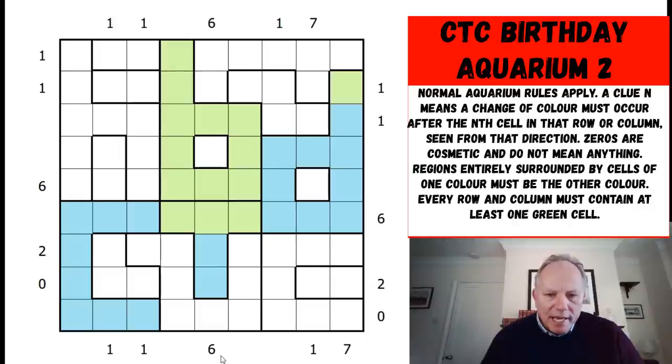Now 6 at the bottom again. 1, 2, 3, 4, 5, 6. Well, that would have been separate anyway, because there was this extra rule that places surrounded by one color must be the other color. So have I done all the 6s and 7 clues, which seemed very useful indeed. I got lucky with them.